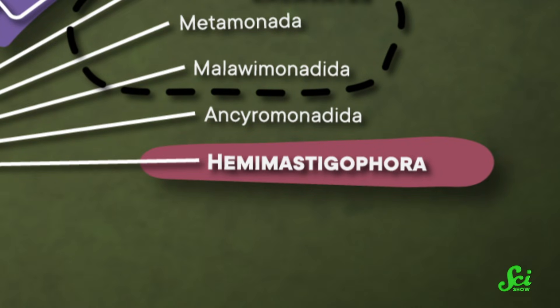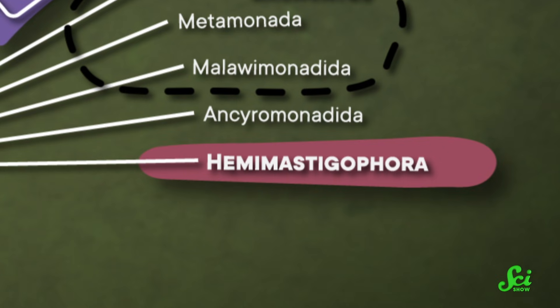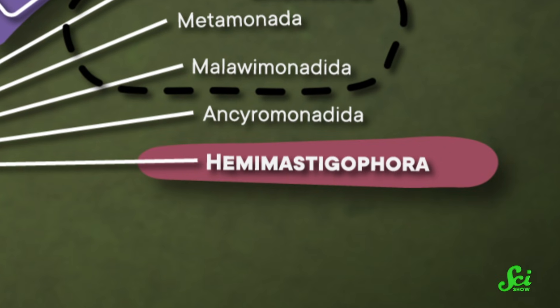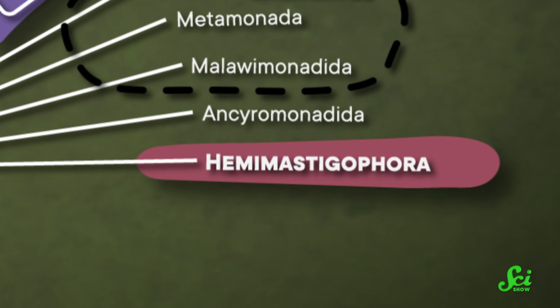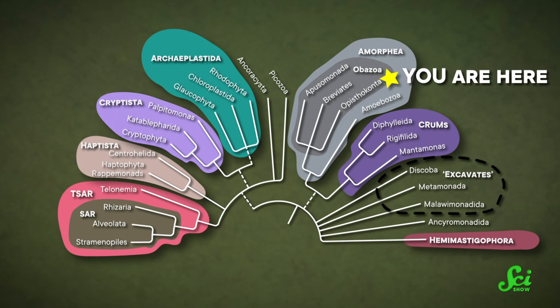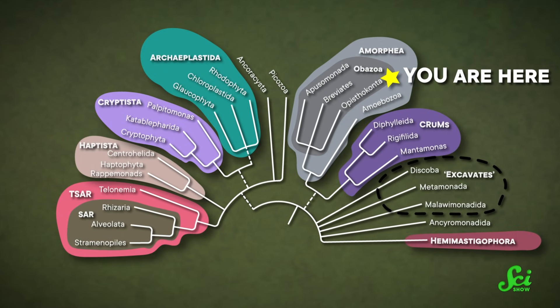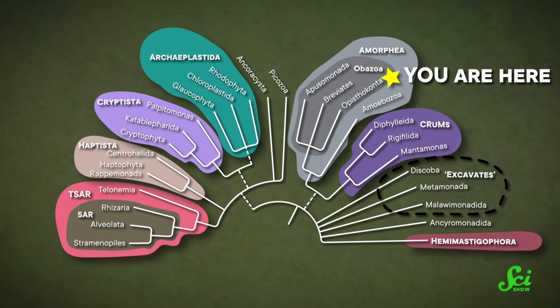Or there's Hemimastigotes, a group of predatory protists that are extremely genetically different from anything else in the eukaryote tree. That's made them the hardest to place, and so, for now at least, they're their own supergroup. Now, this newest tree is far from perfect. As you can see, there are still a bunch of orphan groups that don't seem to fit anywhere. Some researchers think some of these groups might make up their own supergroup called Excavata, but others don't agree.